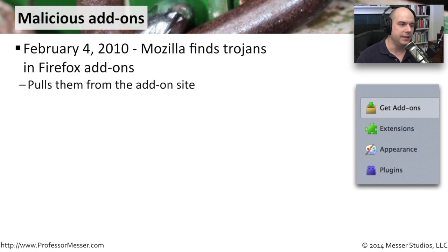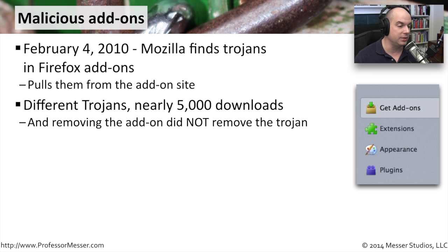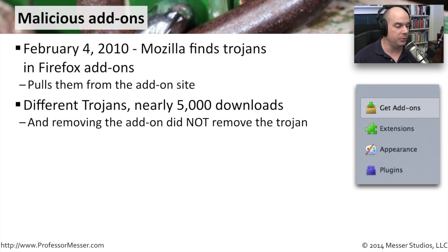These worries are not completely unfounded. On February 4th, 2010, Mozilla, the developer of Firefox, found Trojans in two separate Firefox add-ons — ones that you could get exactly as we just did: go to the add-on site, click a button, and it's installed on your computer. Inside of that was malware, a Trojan, trying to get you to install it so it could put that on your system. Nearly 5,000 downloads across two different Trojans — they weren't even the same Trojan. Obviously, they removed the add-ons from the main library so people could not download them anymore. But even if you went back to the add-ons in your browser and chose to uninstall the add-on, it was too late. The malware was already on your computer. Uninstalling the add-on meant nothing — it did not remove the malware from the system. So those people who installed this particular add-on were most likely infected by this particular problem.